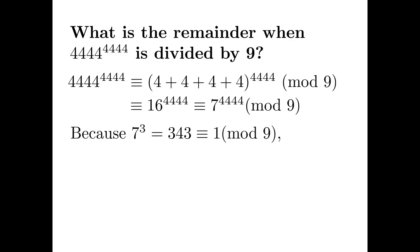Moreover, 7 cubed equals 343, which has remainder 1 modulo 9, as does 7 to the power of 6, 7 to the power of 9, 7 to the power of 12, and so on. Therefore, 7 to the power of 4,444 has remainder 7.